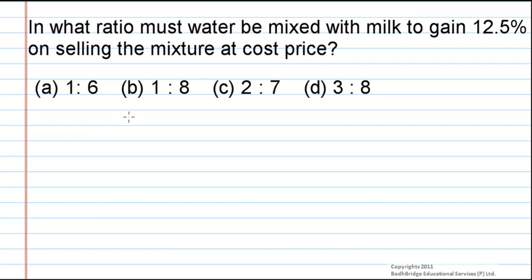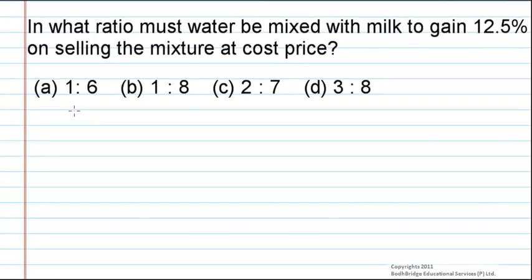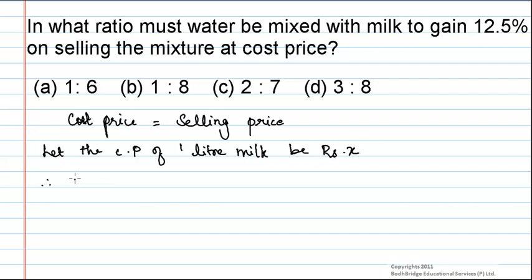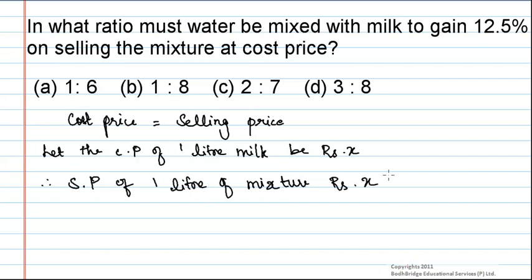It is given in the question that the selling price of the mixture is equal to the cost price. Therefore, we can say that cost price is equal to selling price. Let the cost price of 1 litre of milk be X. Therefore, the selling price of 1 litre of mixture will also be equal to X.